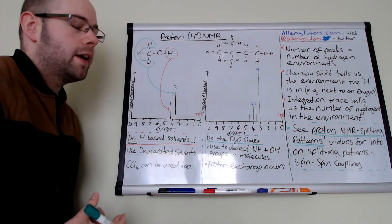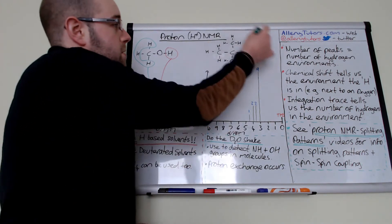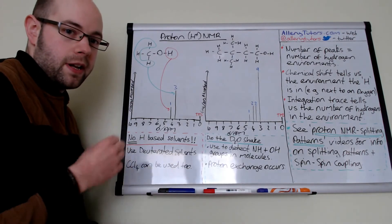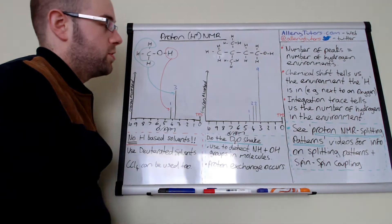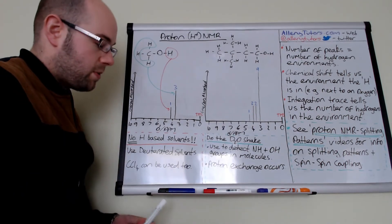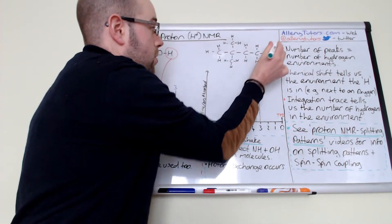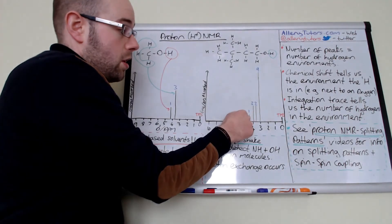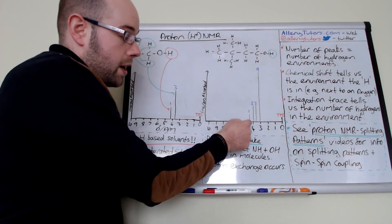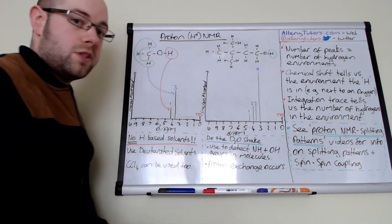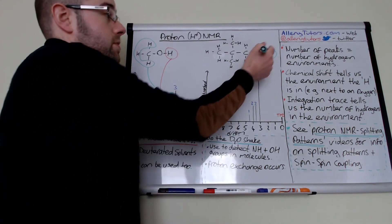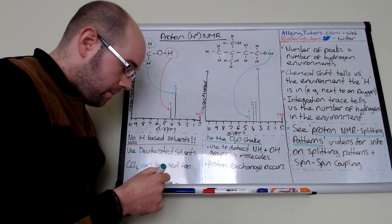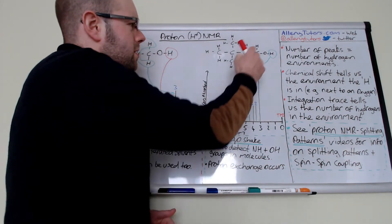Let's look at a more complex example with a few more peaks. We've got this molecule here — there's a bit of symmetry and we've still got an alcohol in there. The first thing we notice is we've got a hydrogen on the OH, so straight away we're looking for one peak with an integration of 1. This is the only peak with an integration of 1, and it's shifted quite high up, which tells us this hydrogen is bonded to something electronegative — the oxygen.